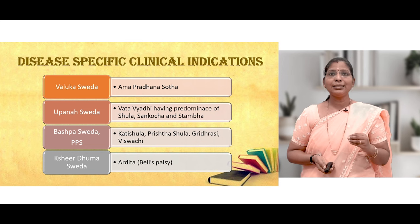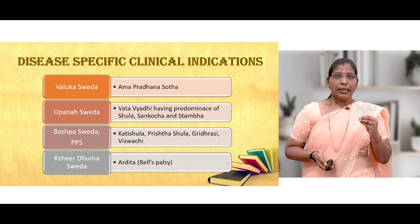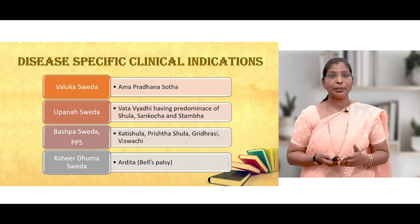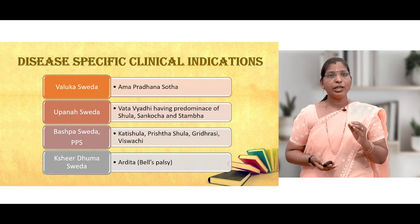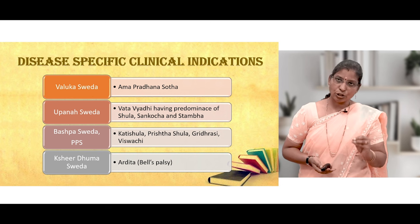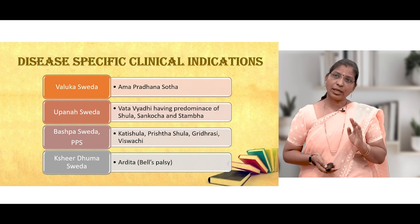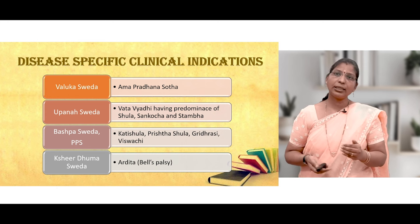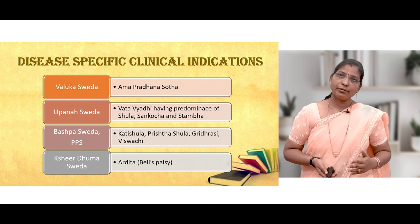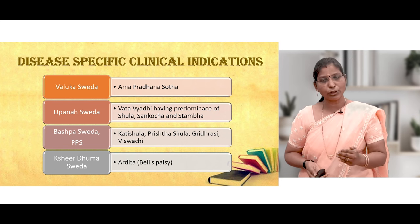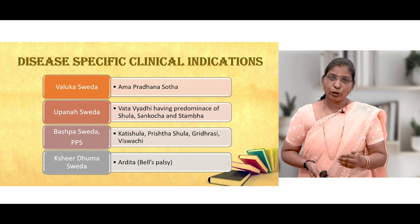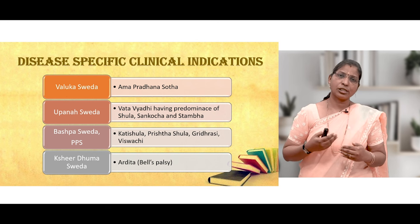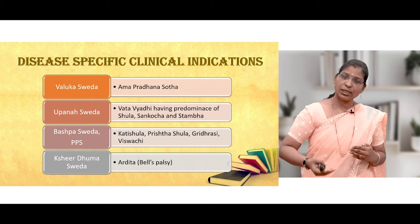For disease-specific clinical indications, Valuka Sveda is mostly indicated in Amapradhana Shotha or whenever there is Amavastha in any disease — such as Amavastha of Sandhigatvata, Vata Shonita, rheumatoid arthritis, ankylosing spondylosis, or SLE.